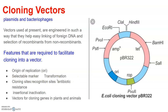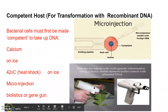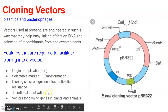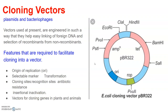The second feature is the selectable marker. In addition to the ORI, the vector requires a selectable marker which helps in identifying and eliminating non-transformants and selectively permitting the growth of transformants. Transformation is a procedure through which a piece of DNA is introduced into a host bacterium. Normally, the genes encoding resistance to antibiotics such as ampicillin, chloramphenicol, tetracycline, or kanamycin are considered useful selectable markers for E. coli.